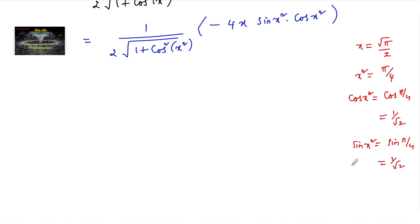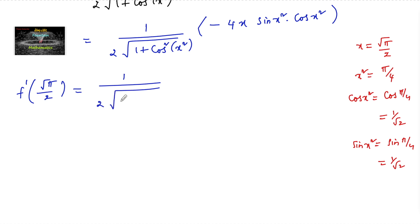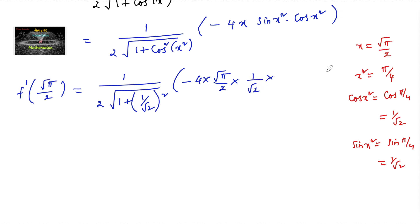So we can write f'(√(π/2)) = 1 over 2√(1 + cos²(x²)), where cos²(x²) becomes (1/√2)² = 1/2, times −4·(√(π/2))·sin(x²), where sin(x²) = 1/√2. This equals 1 over 2·√(1 + 1/2) times −4·(√(π/2))·(1/√2).